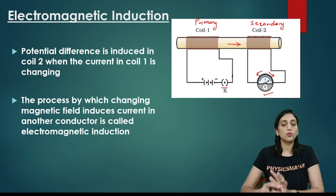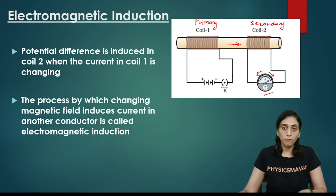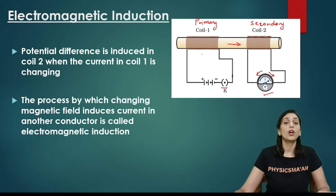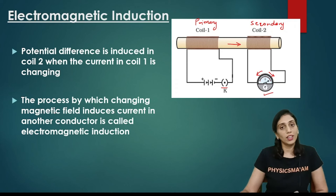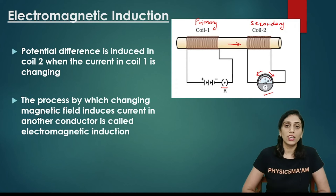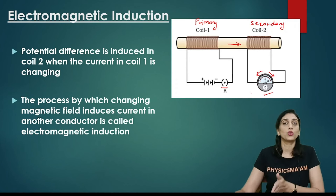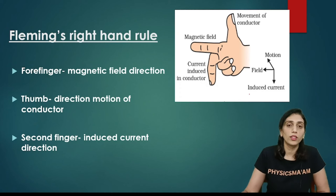So this is what we have seen — the process by which changing the magnetic field induces current. You change the magnetic field which induces the current in another coil. The definition is simple: it is the process by which a changing magnetic field induces current in another conductor — that is nothing but electromagnetic induction, and this is the principle used in electric generators. In electromagnetic induction, there is a flux linking — the magnetic field linkage between one coil and another. So if we have current induced, how do I find the direction of the current?